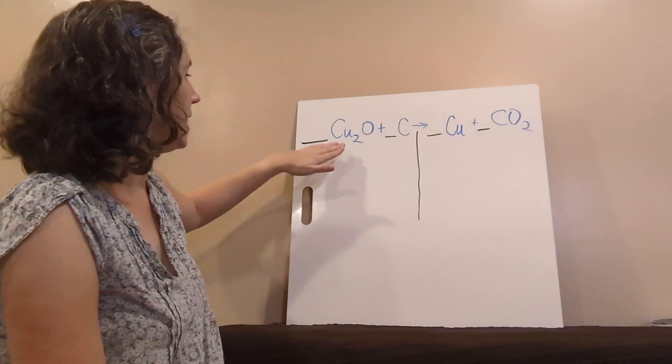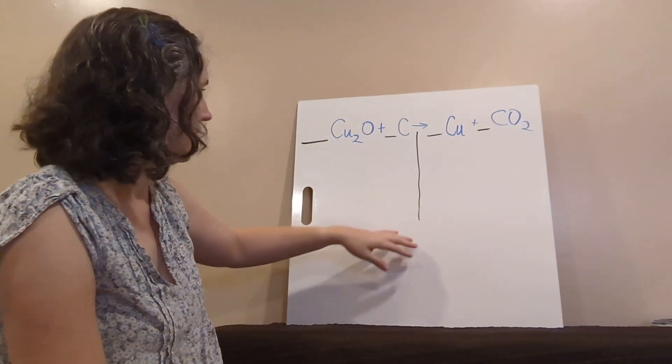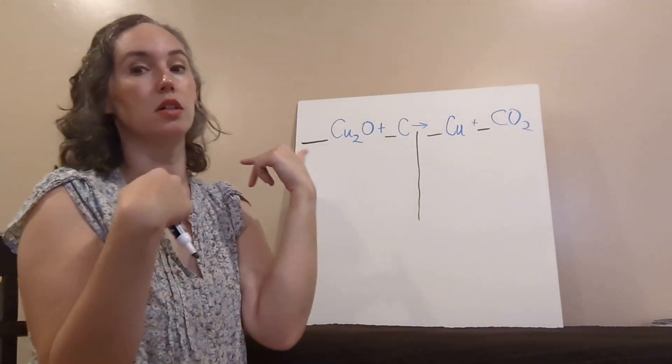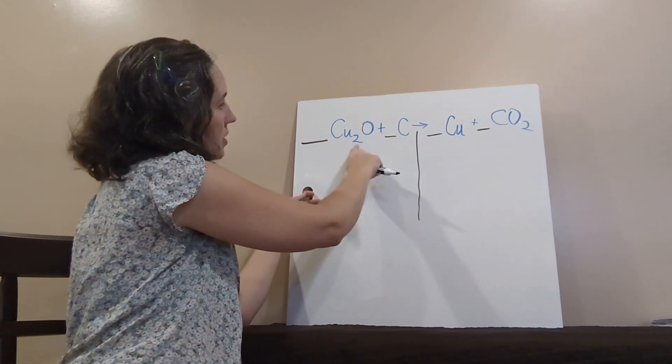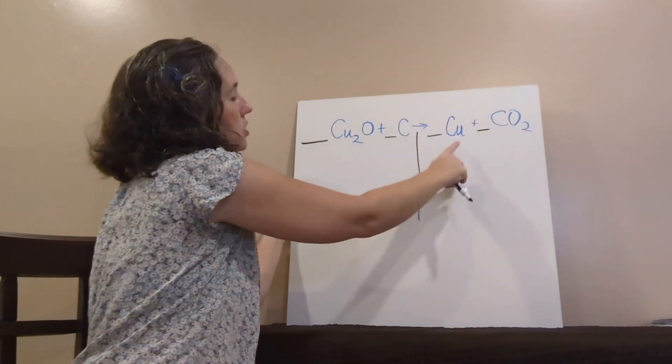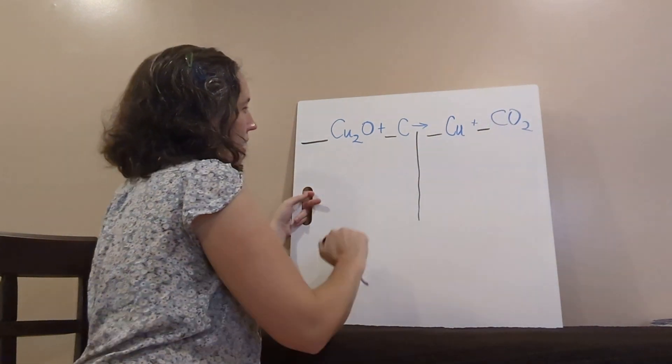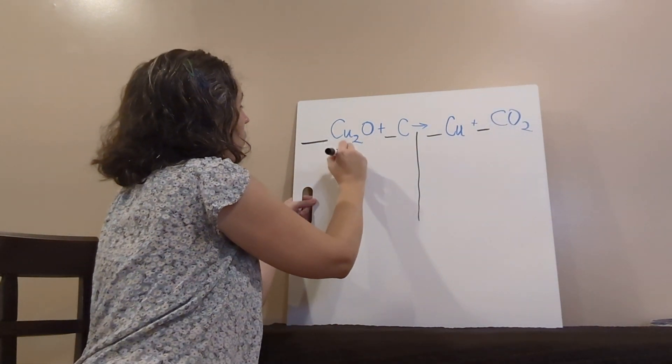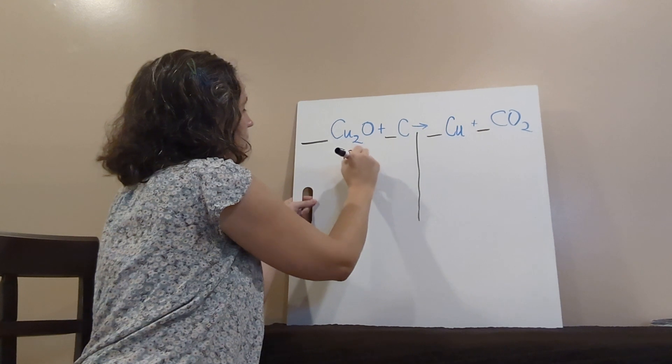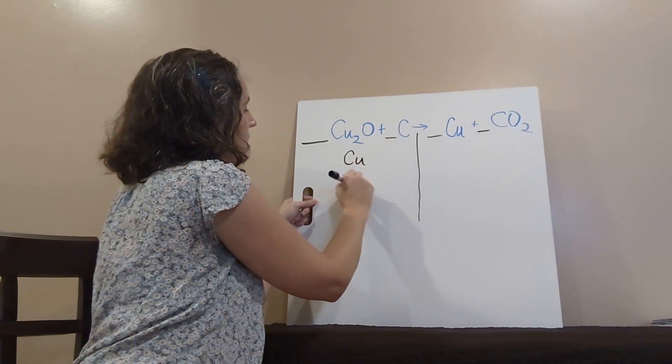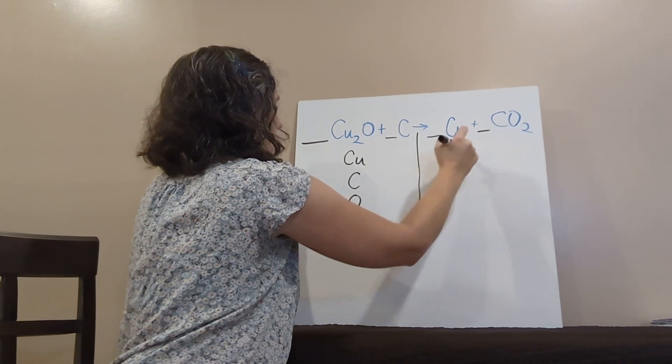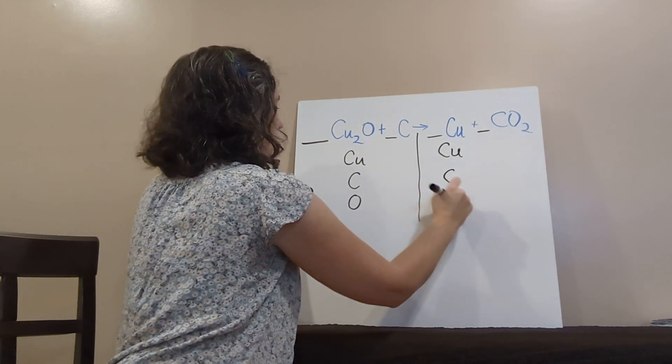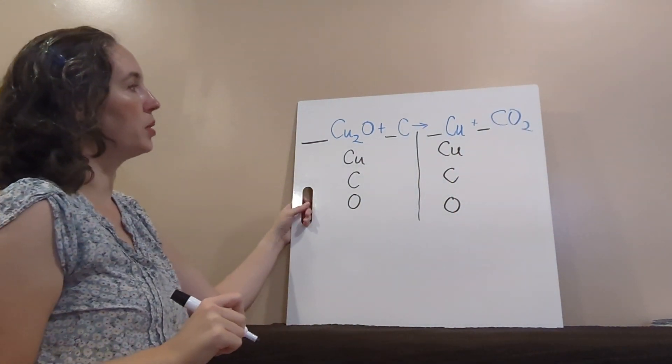So, I've got here, I already did my line, next is to list my elements. So, I've got copper oxide plus carbon yields copper plus carbon dioxide. So, I'm going to do Cu, but I'm going to do C next and do O last. That's just kind of a good habit to do. And I've got that on both sides.